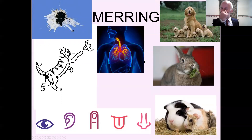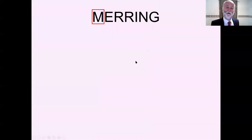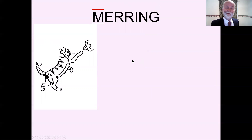MRS GREN is a word — actually a made-up word — that describes things that all living things do. The first letter is M for movement. We can move around, plants move upwards — living things move.